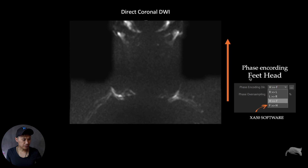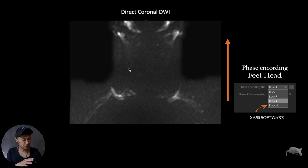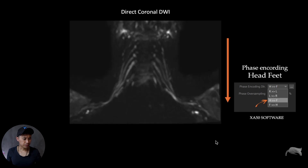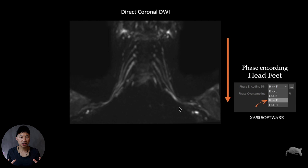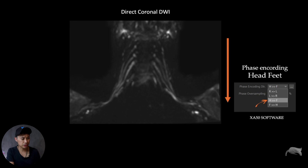You can see the phase encoding direction here is feet-head, which is more like the standard. But you can see there's a lot of distortion and you don't see the nerves at all. But look at this — just swapping the phase encoding to head-feet, and you see the nerve structures are great. A little bit of distortion of course, but much lesser compared to the other images. Swapping the phase encoding direction gives you images like this.